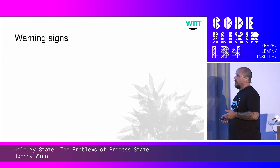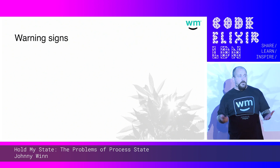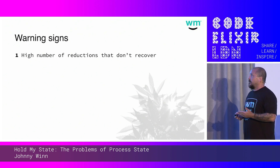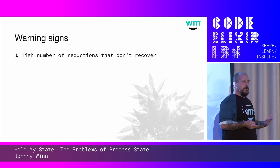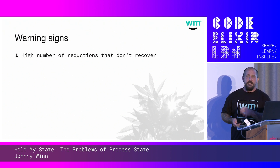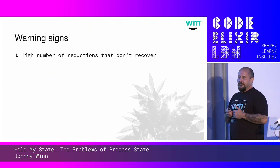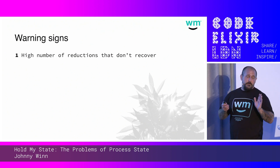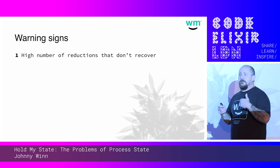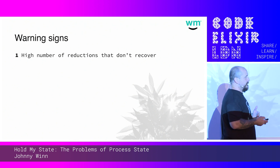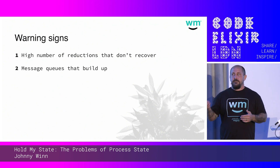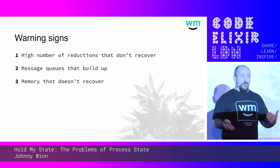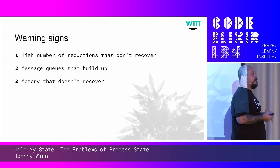There are some warning signs we can look for within our applications. Using Observer is one of the most powerful tools we can have. The first thing we can look for is a high number of reductions that don't seem to recover. A reduction is basically a counter of the functions being called for a process. Reductions are one of the things the scheduler does to make sure each process gets somewhat fair ability to execute. Message queues that build up — when you start passing too many messages, the queues will fill up and memory becomes a problem. The larger the message, the more the queue gets full, the more memory you consume, and the more likely that process is to crash.